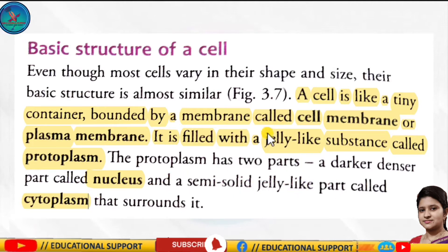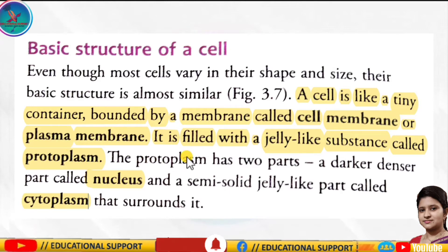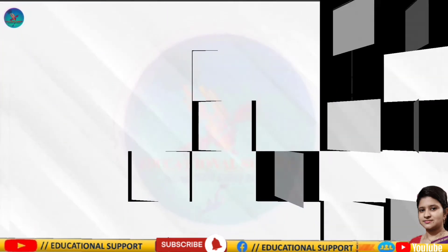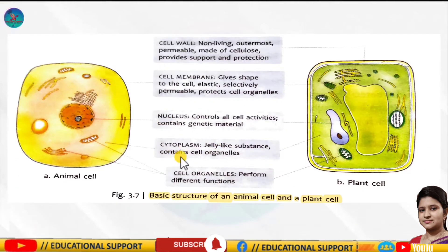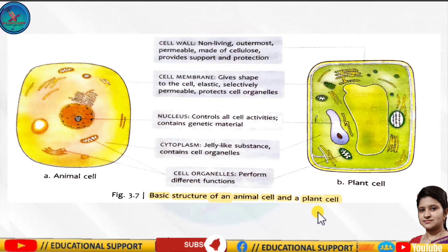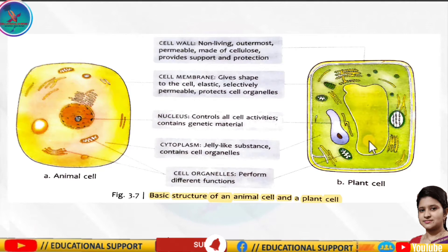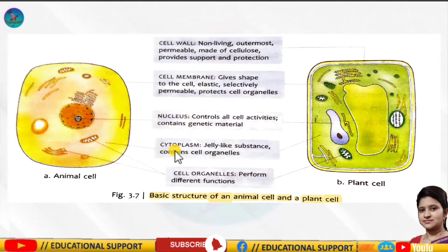You have to remember what is meant by cell membrane or plasma membrane, and what is protoplasm and its parts. Here you can see the basic structure of an animal cell and a plant cell. Remember the bold terms: cell wall, cell membrane, nucleus, cytoplasm, and cell organs.